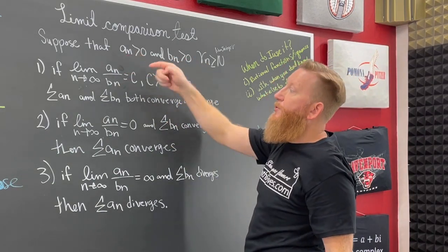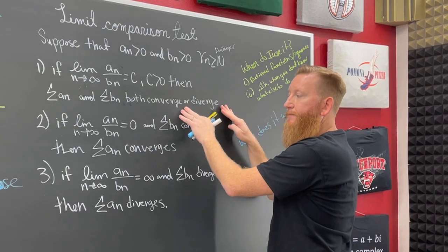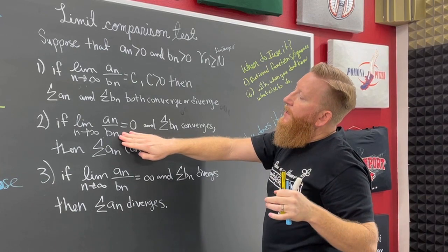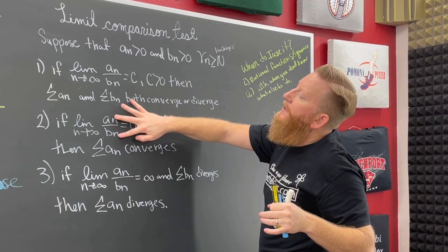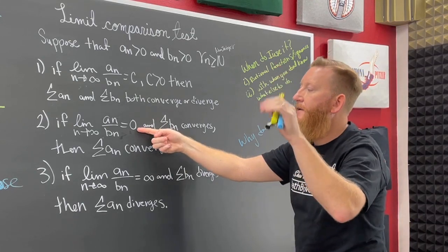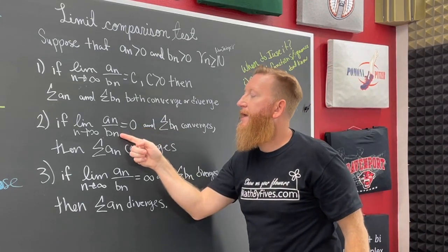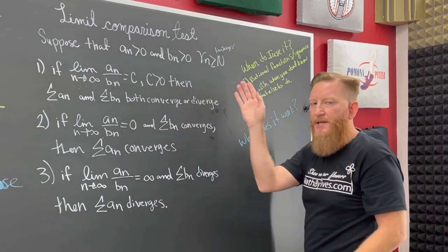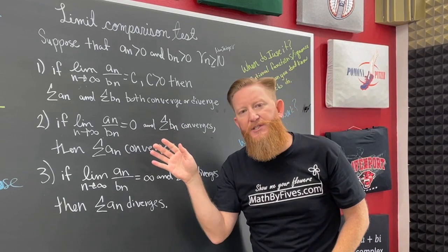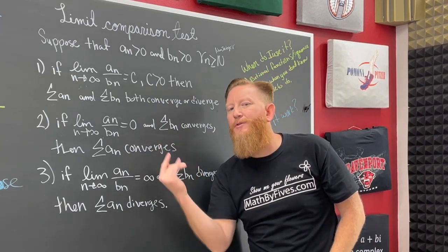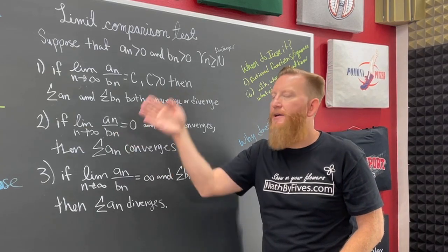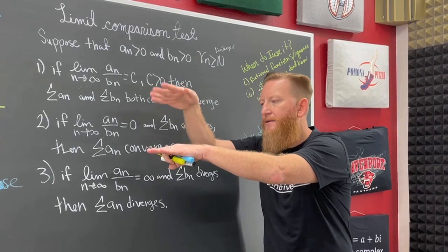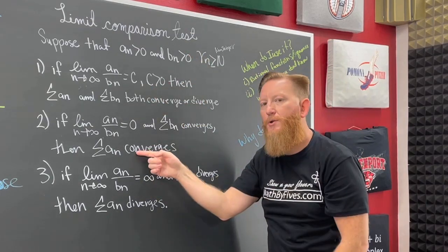If the sequences grow the same, then the series do the same. If that limit goes to zero, the denominator is bigger, and if its series converges — think about it, we just got out of the comparison test. That's why a lot of books have both of these tests in the same section. What does that say? B_n is bigger — b_n is bigger than a_n in the tail — so if b_n converges, then so does a_n.